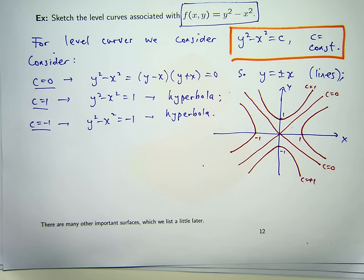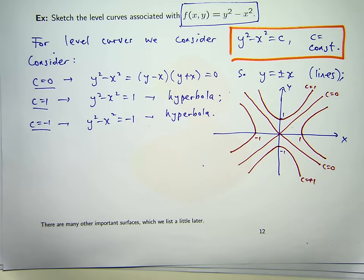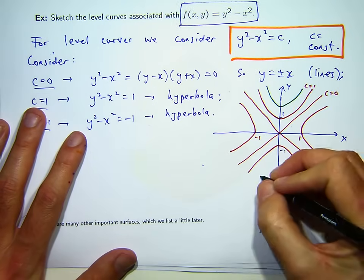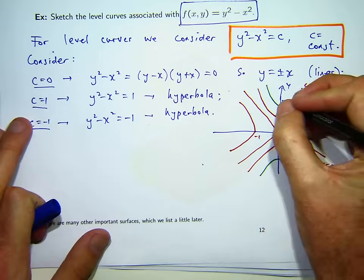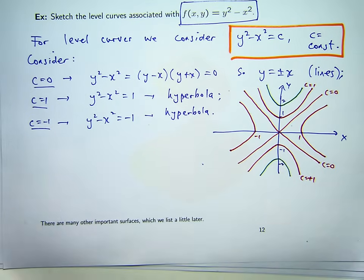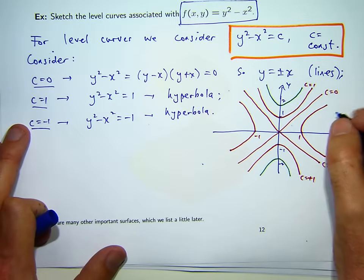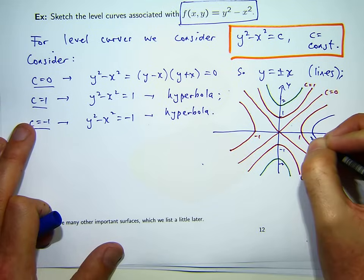So, hopefully you can see a pattern now. If I chose, say, C equals 2 in here, what do you think the curve would look like? Well, it would look like something like this, again, more hyperbole that cut the axis, the y axis at 2 and minus 2. And similarly, if I chose C equals minus 2 here, you would get these curves here.